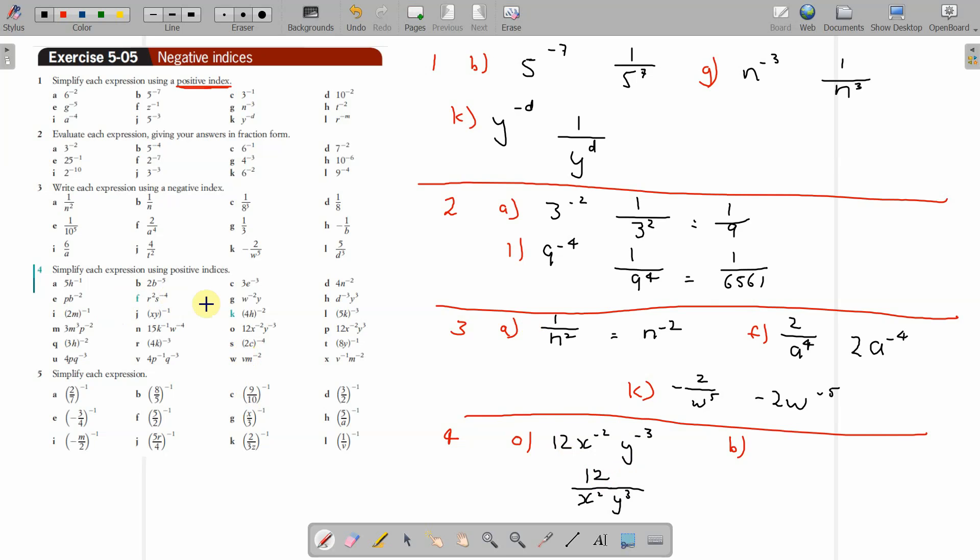There you go, that's 4o positive index. And part b: 2b to the minus 5. We'll do the b to the minus 5 first, that's 1 over b to the power of 5, but then it's 2 times that, so that becomes 2 over b to the power of 5.